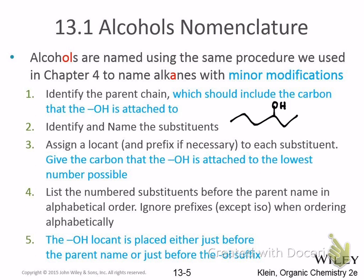When you put the name together, you ignore prefixes like mono, di, tri — the only prefix included in alphabetization is iso. The notes don't address diols, where you'd say 3,4-diol or 4,5-diol. It also doesn't discuss what to do if you have an alkene and an alcohol together — so I'll deal with that in the example, because that's one you need to know how to do.